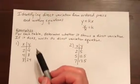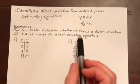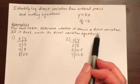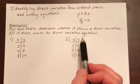So here are our examples. For each table, determine whether the table shows a direct variation. If it does, write its direct variation equation.